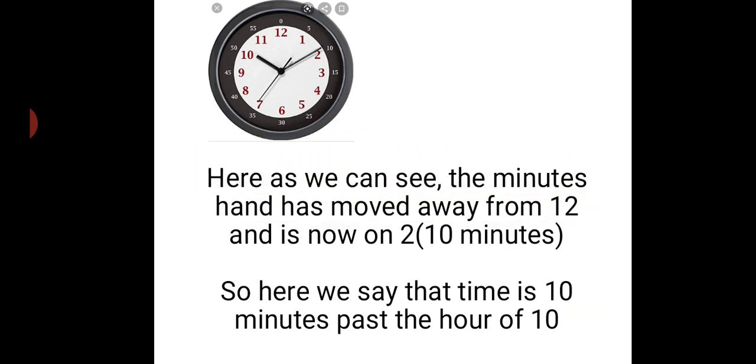Now let's look at this. Can you see this? Here the minute hand has moved away from 12 and it's now on 2. Look at the black circular line—you see that when it's at 1 it is 5 minutes, at 2 it is 10 minutes, at 3 it is 15 minutes, at 4 it is 20 minutes, 5 is 25, 6 is 30, and so on. Now you look at 10—the hour hand too has shifted a little bit slightly from 10. So here we say that the time is 10 minutes past the hour of 10.